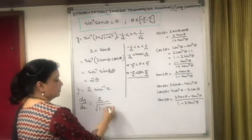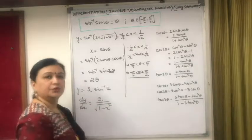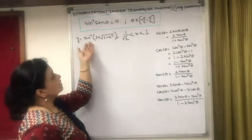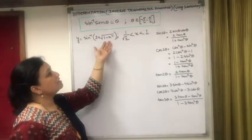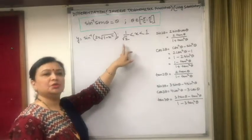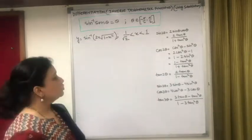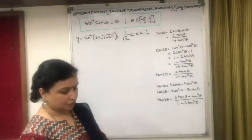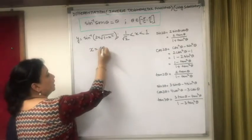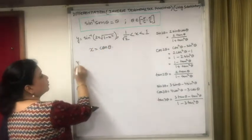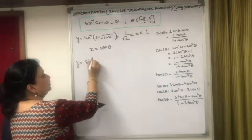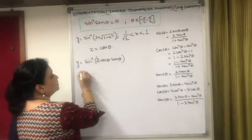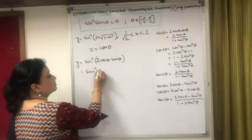Now find dy/dx if y = sin⁻¹(2x√(1-x²)) but with the condition that x ∈ (1/√2, 1). We can substitute x as sin θ or cos θ. Let us try x = cos θ. Substituting x = cos θ, we get y = sin⁻¹(2 cos θ · √(1-cos²θ)) = sin⁻¹(2 cos θ · sin θ) = sin⁻¹(sin 2θ).